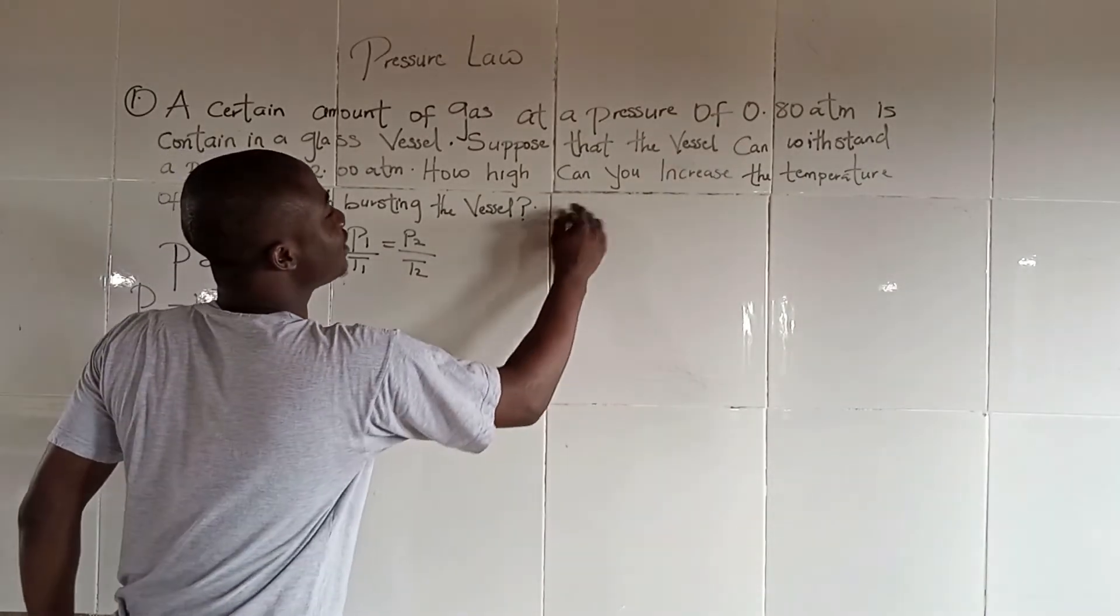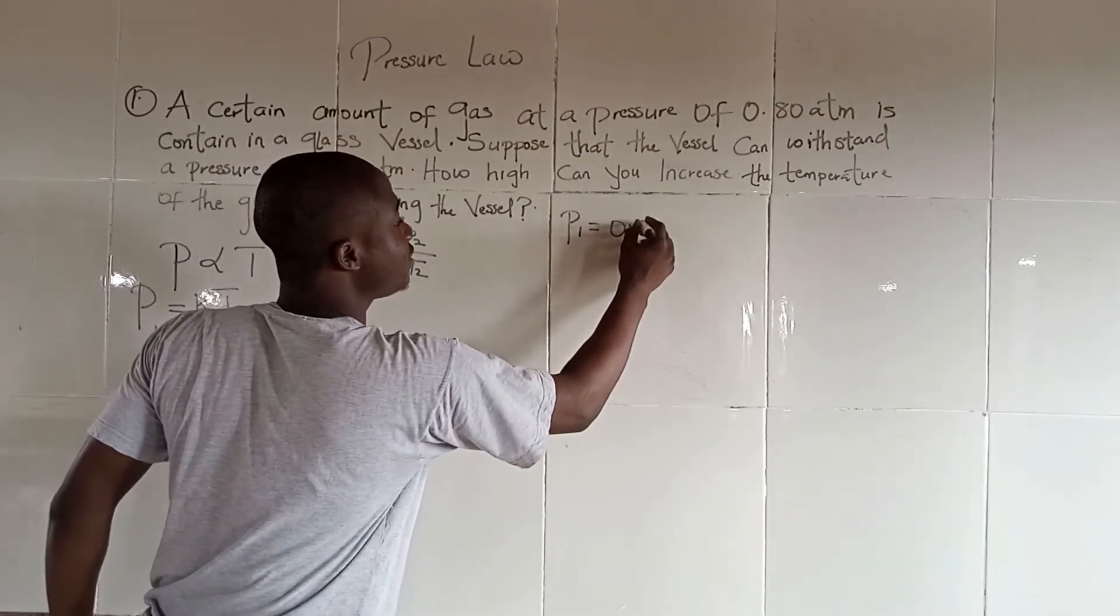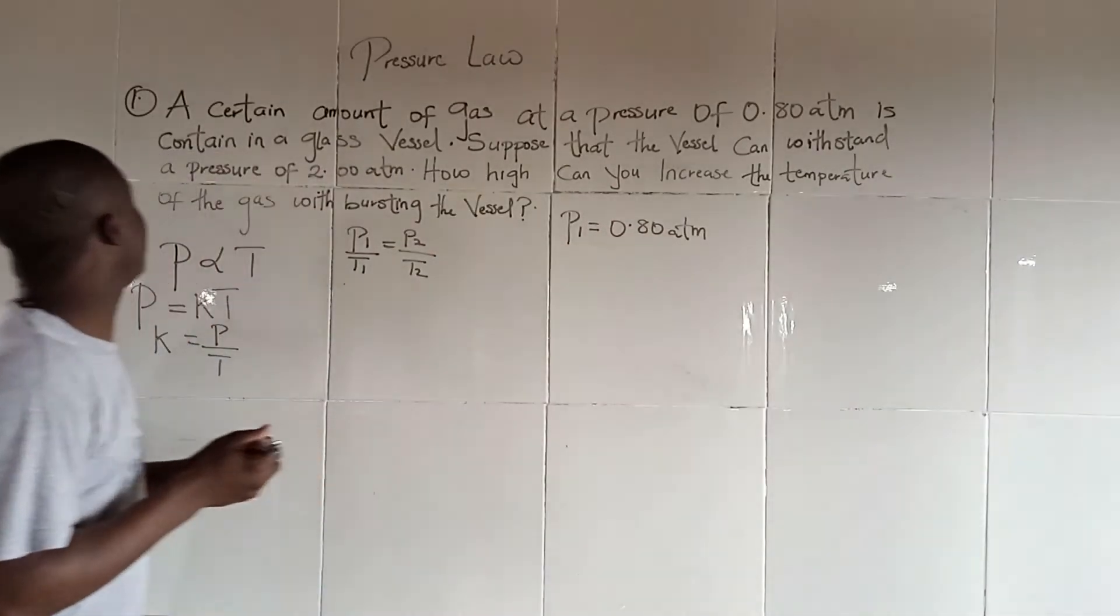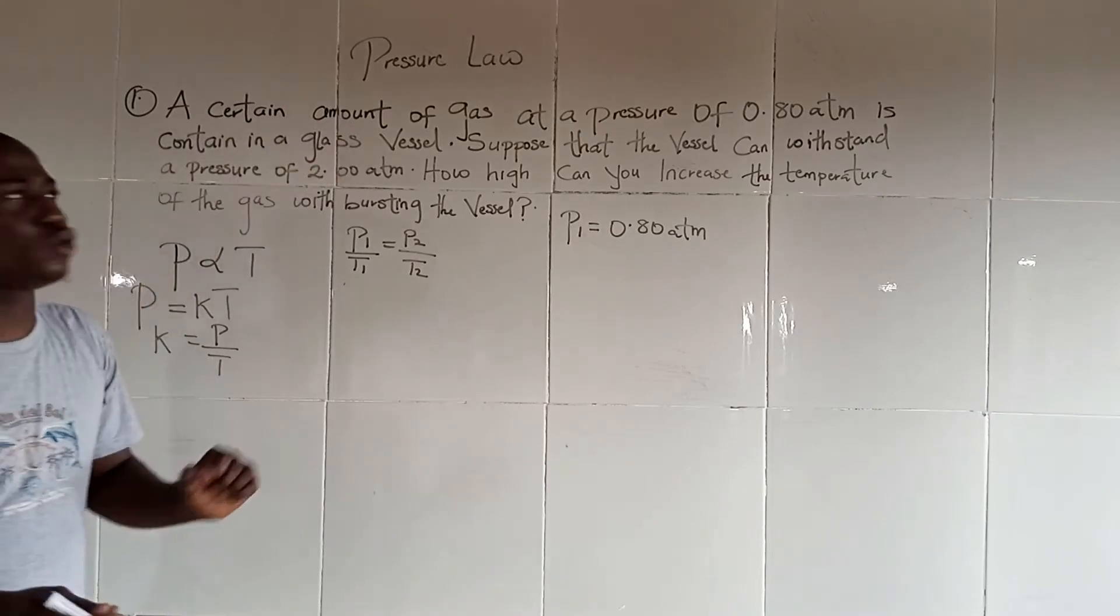It means that is the first pressure we have, so the first pressure is 0.8 atmosphere. The first pressure is contained in a glass vessel.